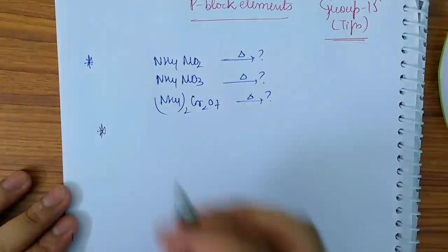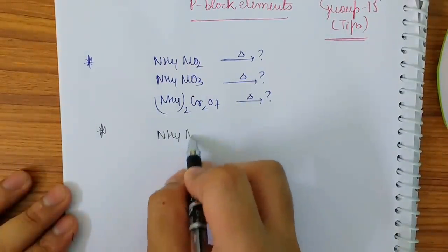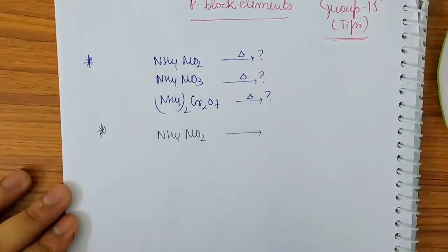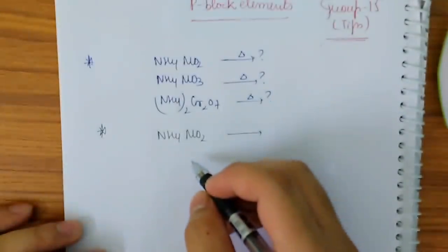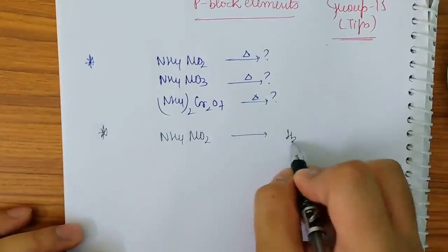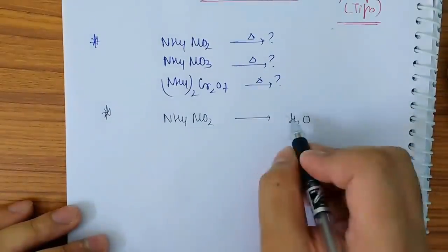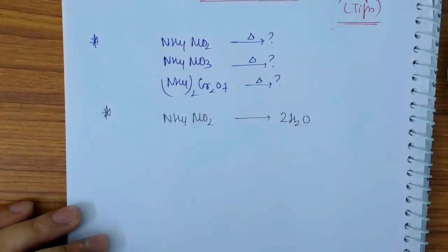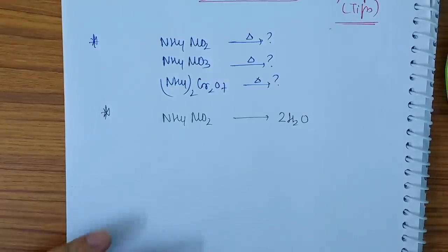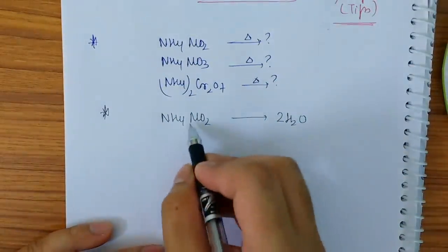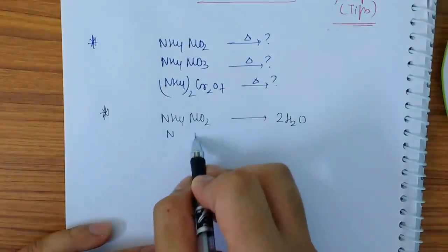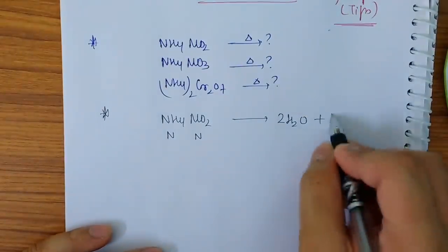Example: NH4NO2. Don't go by the gases, instead go by the water. How many H2O can you remove here? See, I can remove two H2O here, maximum number of H2O you have to remove. So I can remove two H2O here. After removing H2O, what I'm left with is N and N, so N2 gas will be released.